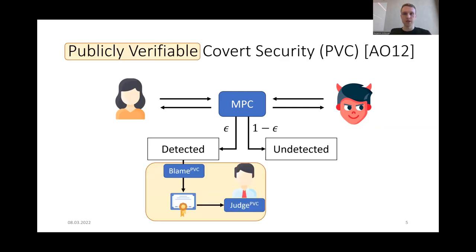The notion was extended by Asharov and Orlandi with the notion of publicly verifiable covert security, short PVC. Here, the covertly secure protocol is extended by two algorithms. The blame algorithm takes the view of an honest party as input after cheating is detected and generates a certificate. This certificate can then be passed to any third party which utilizes the judge algorithm to verify the validity of the certificate. If it's a valid certificate, the third party will be convinced about misbehavior of the corrupted party. The judge algorithm is defined as non-interactive, so the certificate can be sent to any third party later on, even if that party did not contribute to the protocol execution at the beginning.